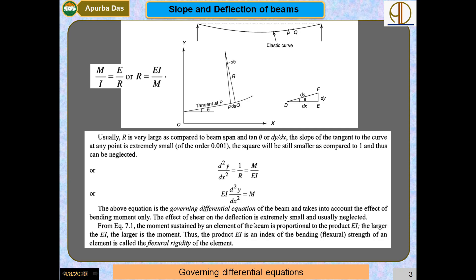We can see that M is proportional to the product of E and I — the larger EI, the larger the moment. The product EI is an important parameter known as the flexural rigidity.